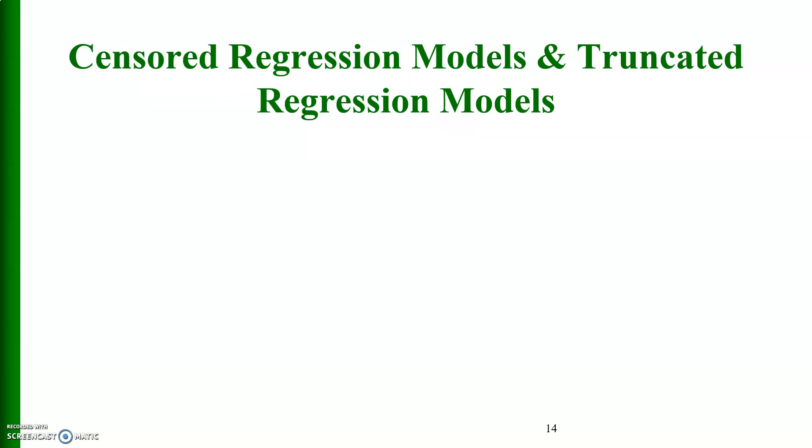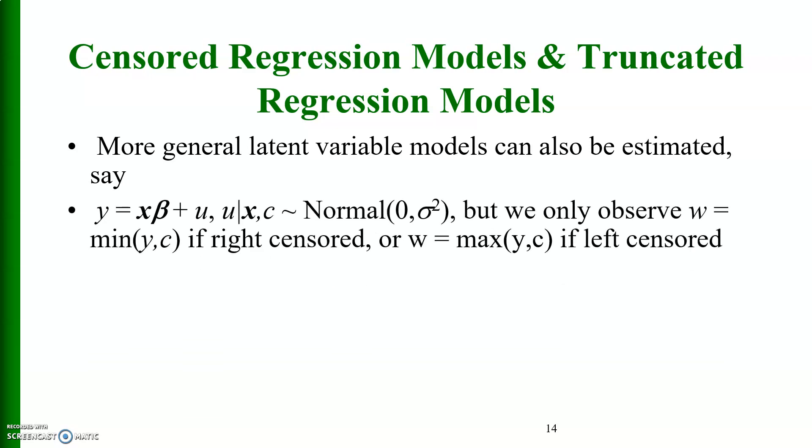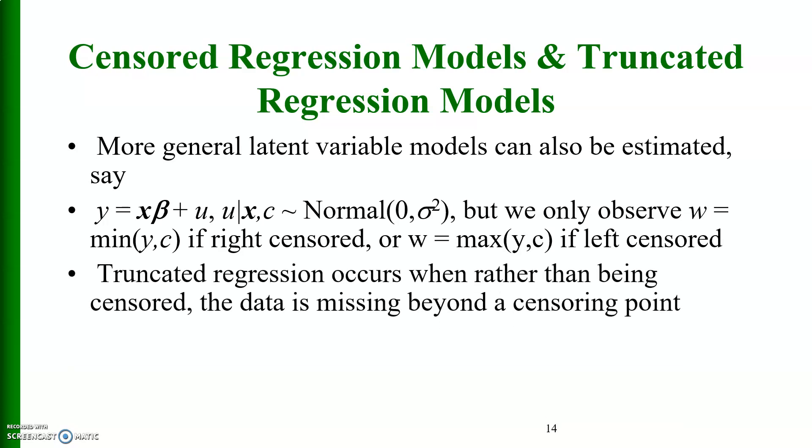Censored regression models and truncated regression models. I have already uploaded some models that involve censored regressions as well as truncated regressions. More general latent variable model can also be estimated. Say y is equal to x beta plus u that has a normal distribution with 0 mean and variance sigma square, but we only observe w is equal to minimum of y, c if right censored, or w is equal to maximum of y and c if left censored. Truncated regression occurs when rather than being censored, the data is missing beyond a censoring point.